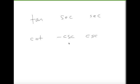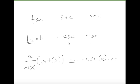So if I want the derivative of cotangent of x, I'll go to the other two things in the same row, and I'll multiply them together. So I see that's negative cosecant of x times cosecant of x, which is negative cosecant squared of x.